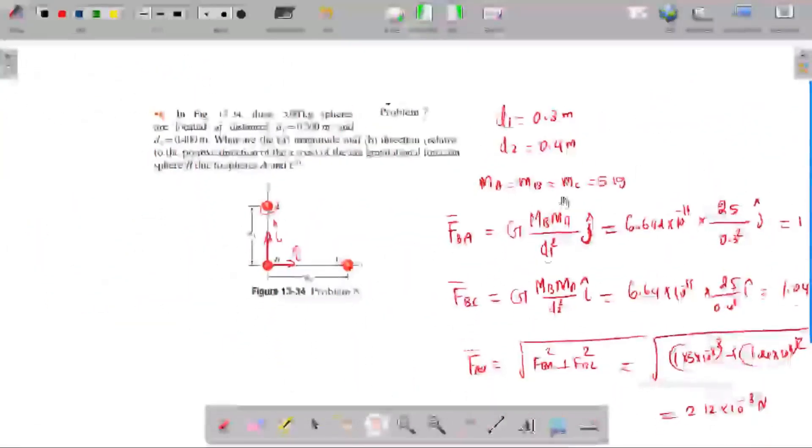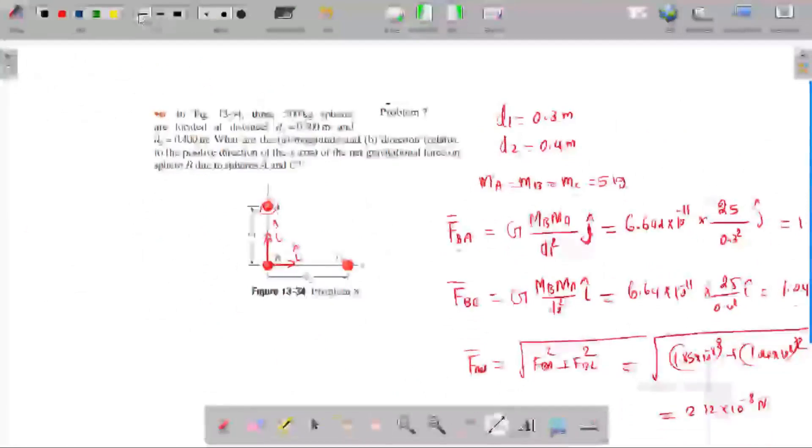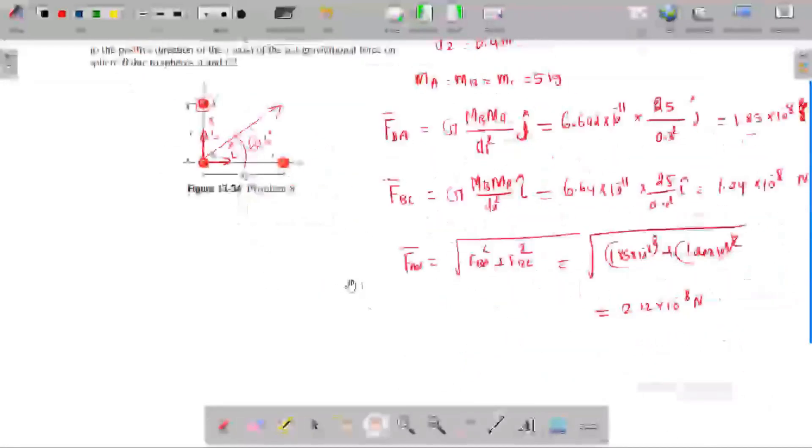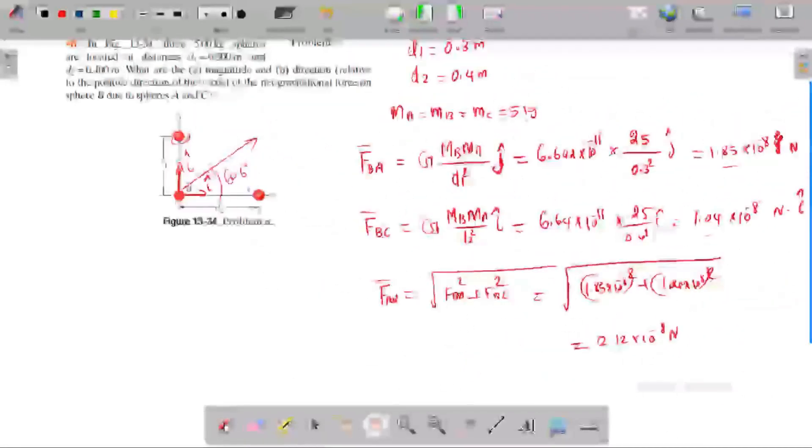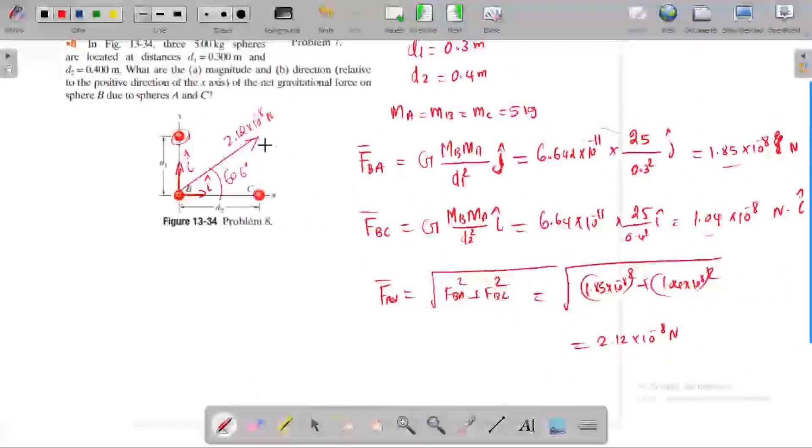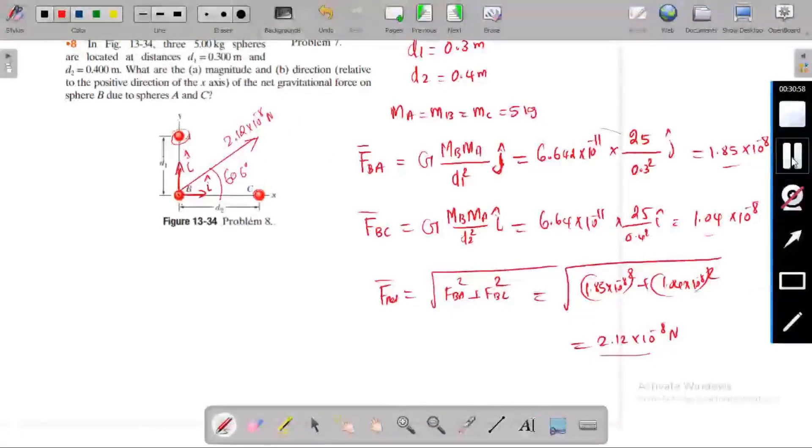So the resultant must be 60.6 degrees from the positive x-axis. The net force magnitude is 2.12 times 10^-8 Newtons, and the direction is 60.6 degrees.